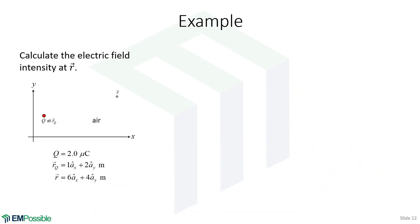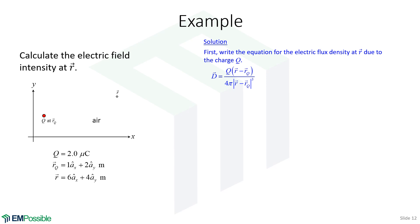Let's do a quick example in full three dimensions. We have a charge Q sitting at position R sub Q. For this problem, charge Q is 2 microcoulombs, sitting at 1 A_X plus 2 A_Y. In air, we have an observation point at position 6 A_X plus 4 A_Y. We would like to calculate the electric field intensity at observation point r. We'll do this in two steps: first calculate the electric flux, then calculate the electric field intensity. Here's the equation I like to use for calculating the electric flux density, which has the r minus r_Q terms.